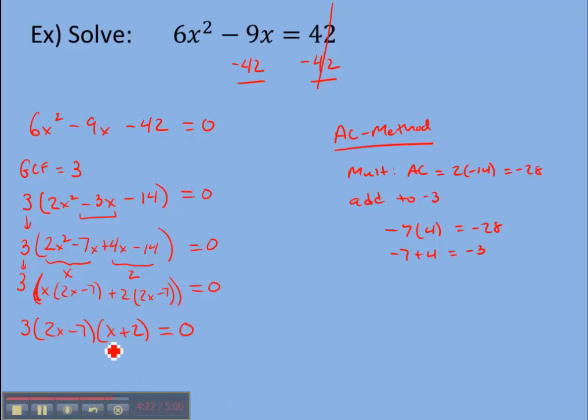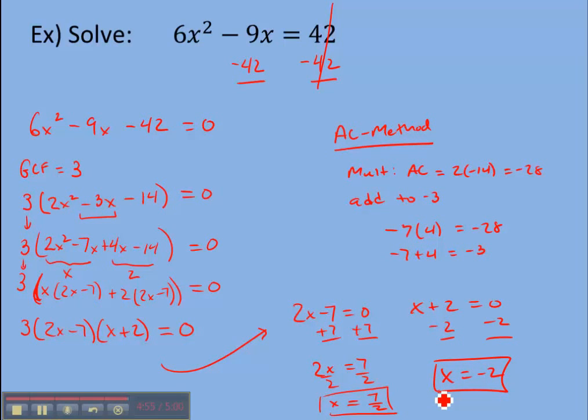And now we set each factor equal to zero, each factor containing a variable. So 3 doesn't equal zero, we can ignore it. There are no variables in 3, it's just 3 by itself. So we're going to set 2x minus 7 equal to zero, and x plus 2 equal to zero, and then solve for each. So here we're going to add 7 and add 7, so we have 2x equals 7, and divide by 2, divide by 2, so we get x equals 7 over 2. So that's one answer. Here we're going to subtract 2 from each side, subtracting 2 we get x equals negative 2, and then we've solved the equation.